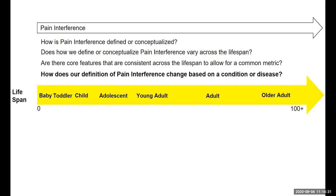Lastly, we might ask how our definition of pain interference varies based on a condition or disease. For example, how we define acute pain interference might be different from chronic pain interference. Or for a person with a severe cognitive or developmental deficit, we might think differently about the way we define pain.